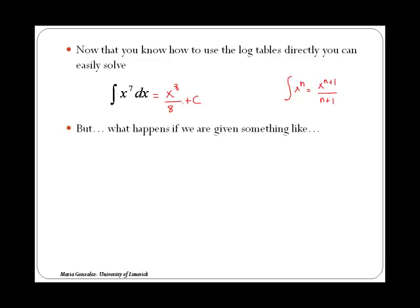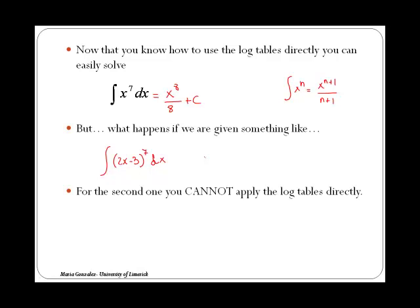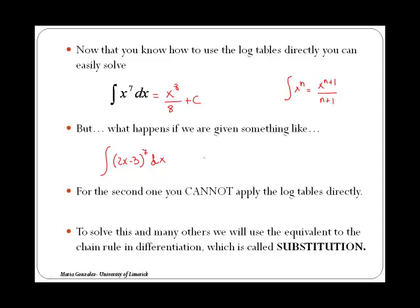But what happens if we are given something like the integral of 2x minus 3 to the 7 dx? If you look at both, both are the integral of a power. However, in the second one, you cannot apply the log tables directly. In order to solve the second one, we are going to apply a technique that is called substitution.